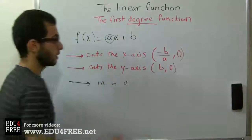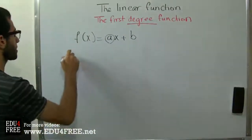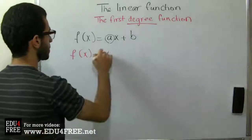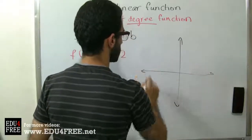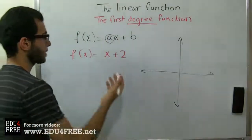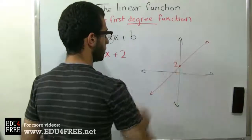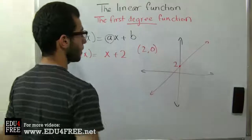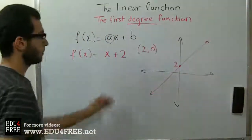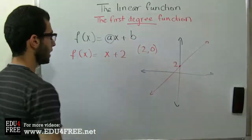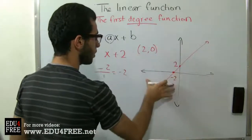Let's try an example. If f(x) = x + 2, we can draw the axes and sketch the function. It cuts the y-axis at the point (0, 2). For the x-axis intercept, we compute -b/a = -2/1 = -2, so the line cuts the x-axis at the point (-2, 0), which is on the negative side of the x-axis.